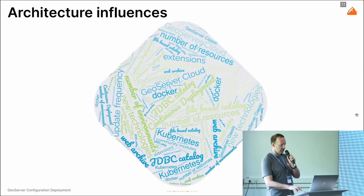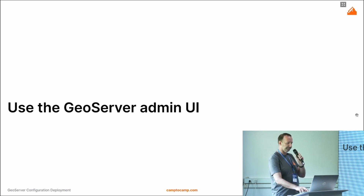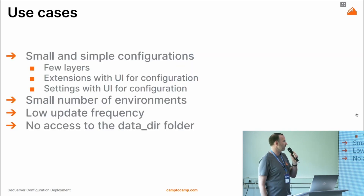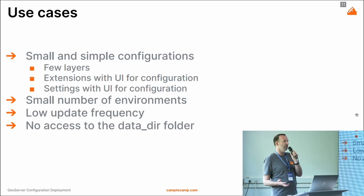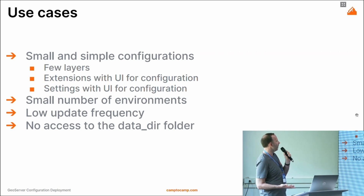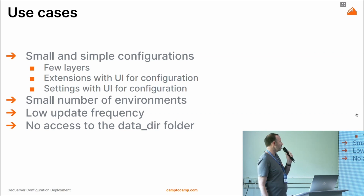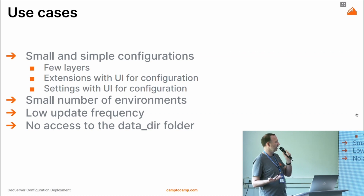So let's see what our options are. The first one — perhaps it's too obvious — but you can use the GeoServer admin UI. The idea is that you have the administration in your UI and you redo the configuration manually on the target environment. It works if you have a small and simple configuration with a few layers — perhaps it's good enough for that customer. But you have some constraints, because you can only do that if you have extensions with your UI administration or some specific settings, and you won't be able to scale if you have a lot of environments. So for CI/CD workflows, for example, it is not going to work.